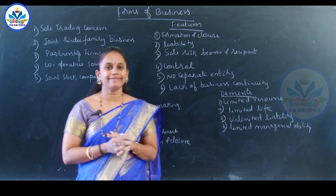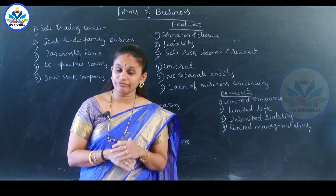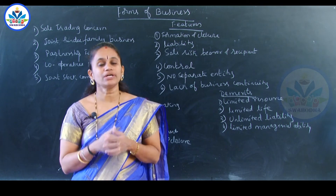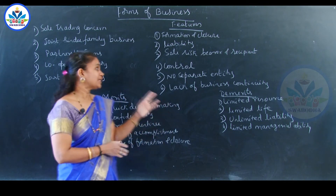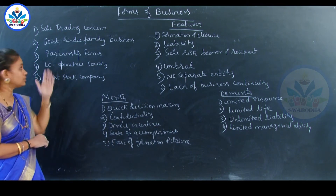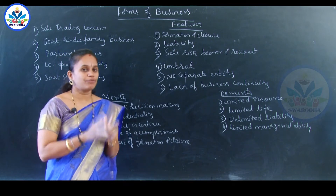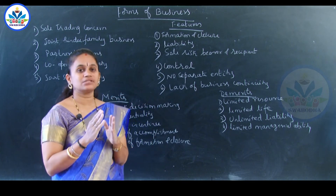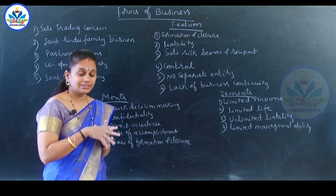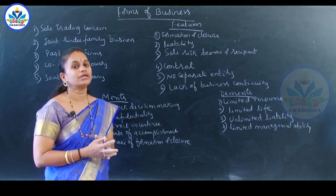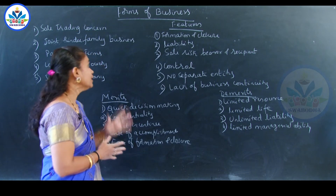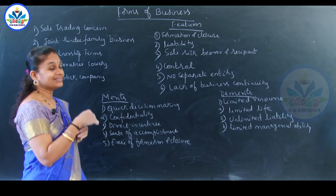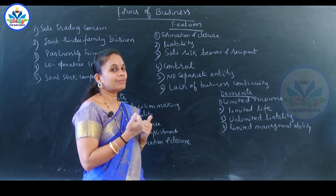Next feature: sole risk bearer and profit recipient. The sole trader is the only person to enjoy the profit as well as to bear the risk. If profit comes, he enjoys it completely — he need not share it. But in a partnership firm or joint Hindu family business, the profit has to be distributed among other members according to the partnership ratio. In sole trading concern, there is no such sharing, but the risk or loss must also be borne by that single person.